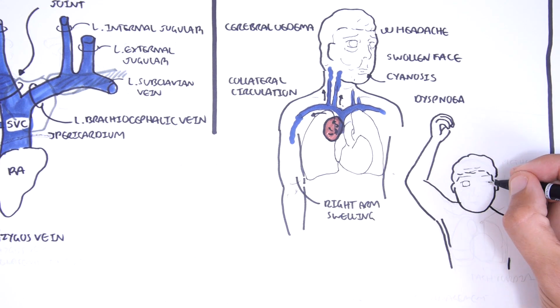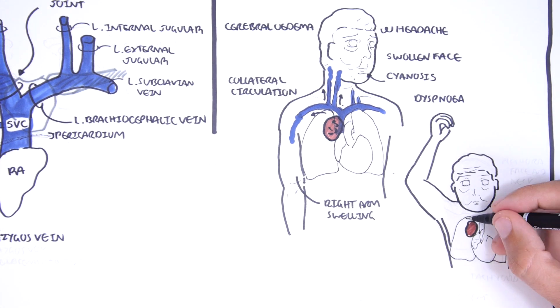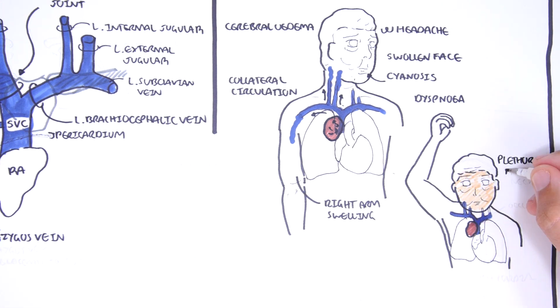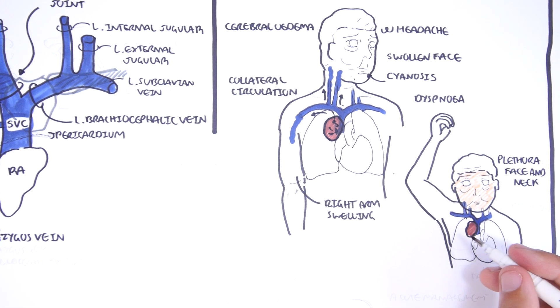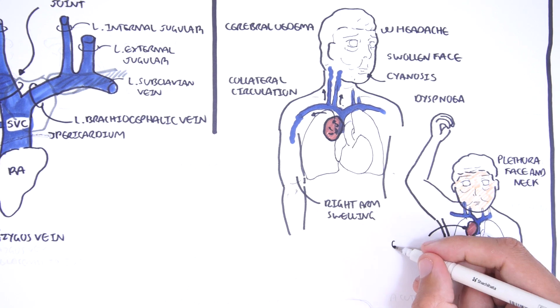Superior vena cava obstruction can cause a plethora of the face and neck. When the arms are raised above the head, this will increase impedance of the superior vena cava drainage due to the mass pushing against it.